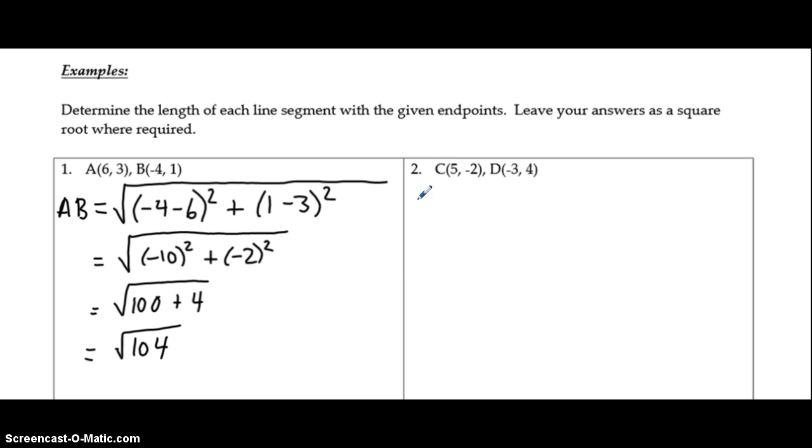So for number two, same thing. In this case, my endpoints are CD. So we're going to write CD is equal to square root of, and start substituting our numbers into the formula. So we're going to grab our x2, negative 3, minus x1 squared, plus y2 minus...